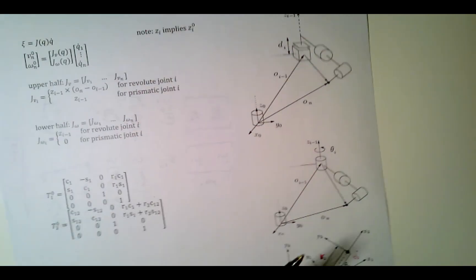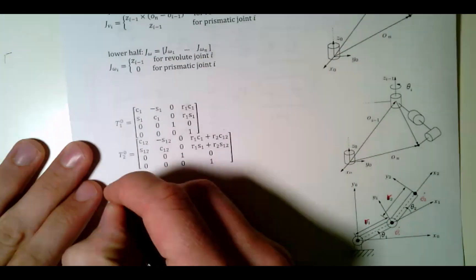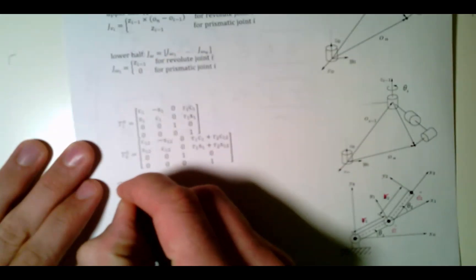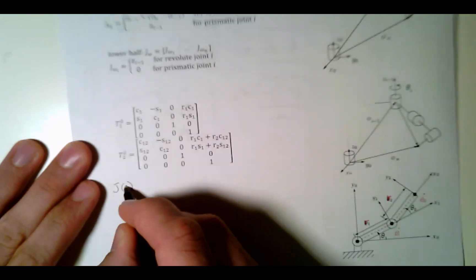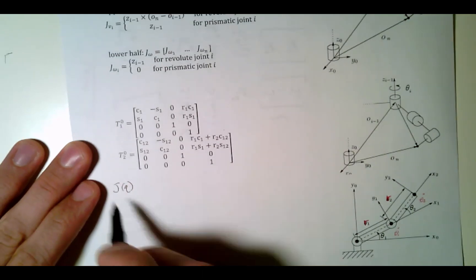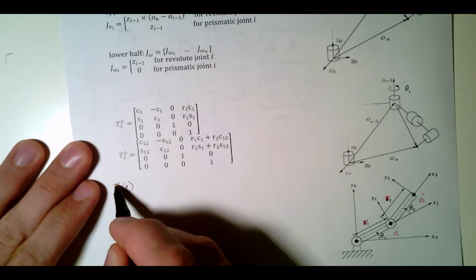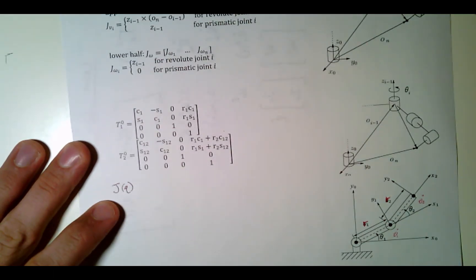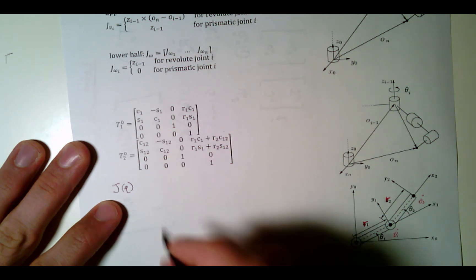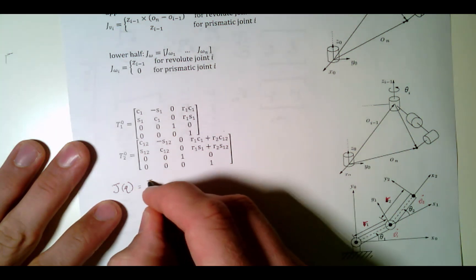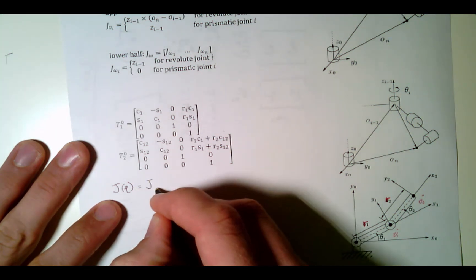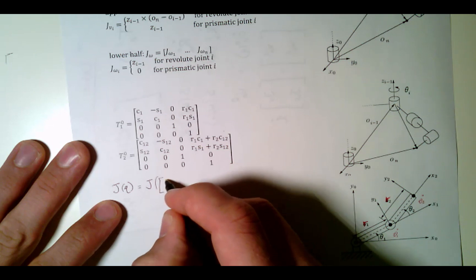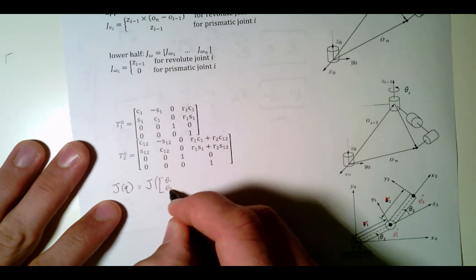We want to know: what is J of q? This is called the Jacobian, and it is a function of the current joint values. So this is really: what is J of our two joints, theta1 and theta2?